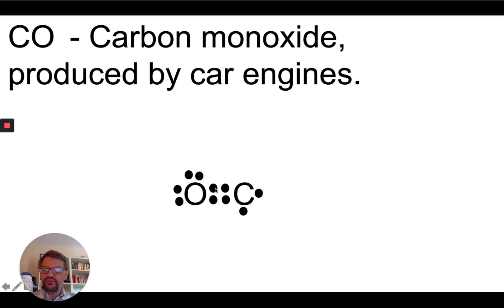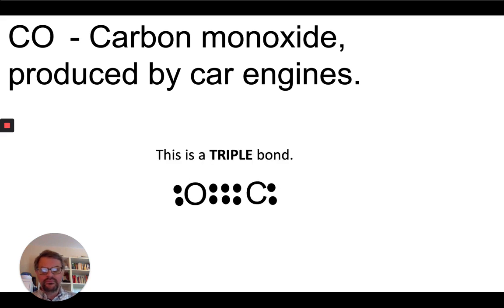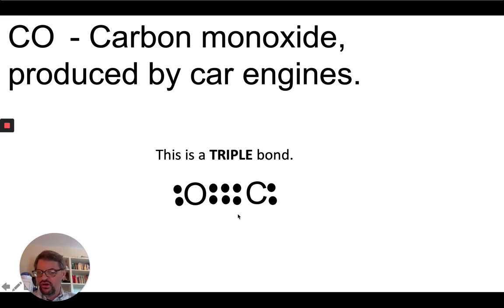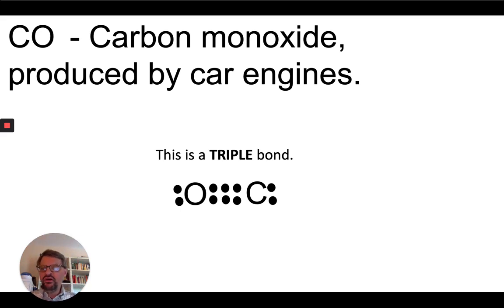After moving electrons, oxygen has two, four, six, eight — satisfied. But carbon is not yet satisfied. So we take a pair from the oxygen and move them into the bond — not just two, but four additional electrons — for a total of six electrons between the oxygen and the carbon. For oxygen: two, four, six, eight — it has the octet. For carbon: six shared plus two is eight. This is known as a triple bond, the largest covalent bond possible between atoms. That's the Lewis dot structure for carbon monoxide, with a total of 10 valence electrons.